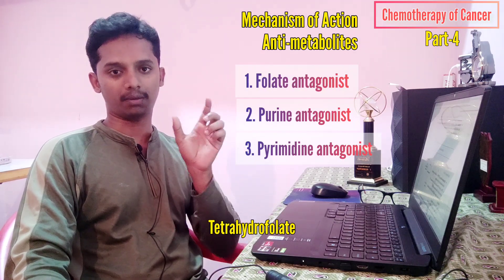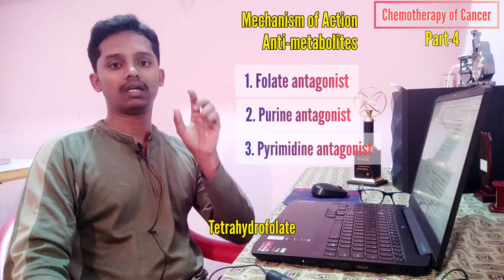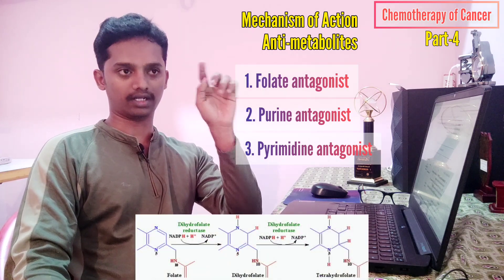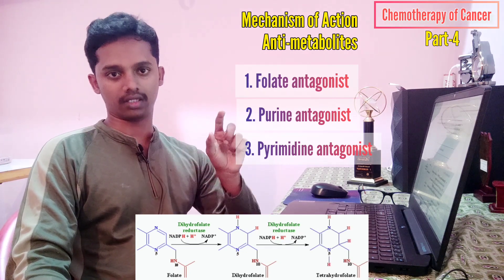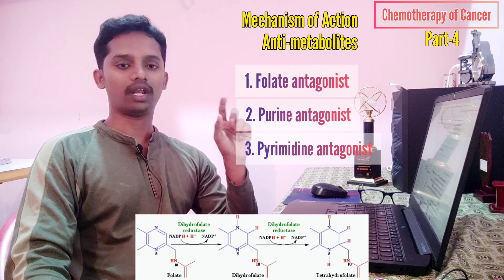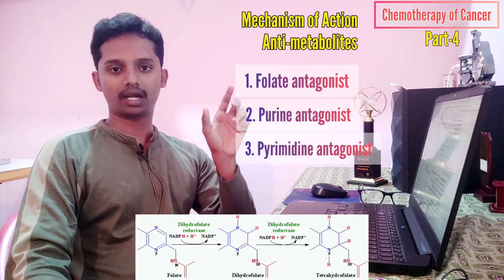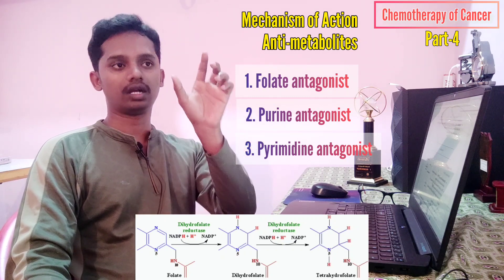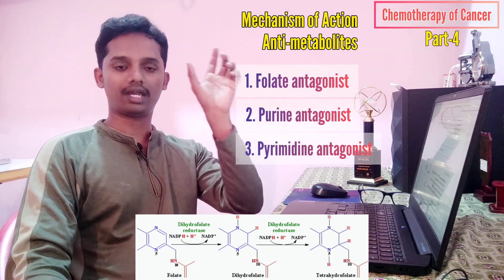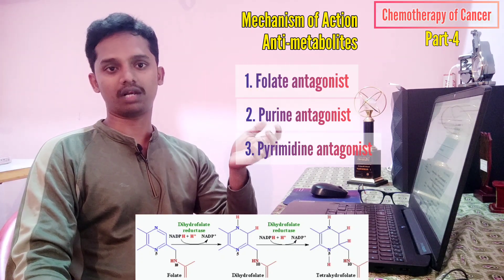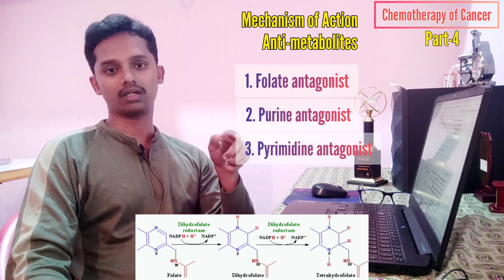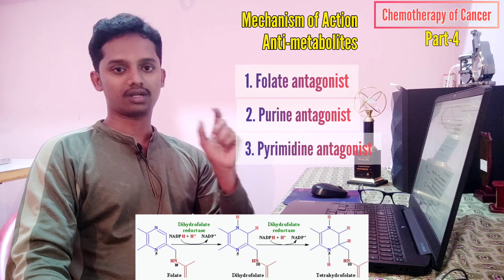Tetrahydrofolate needs to be produced from dihydrofolate. There is an enzyme called dihydrofolate reductase that converts dihydrofolate to tetrahydrofolate. If this enzyme is inhibited, you will have more dihydrofolate but it will not help in DNA synthesis.